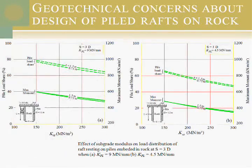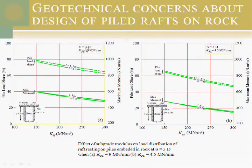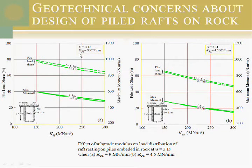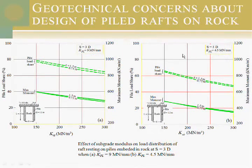As you can see in these figures, we chose to make a pile raft with 25 piles with a spacing of 3D. We assumed that in the finite element using SAFE software, the pile spring constant is 9 MN. In another case we assumed that it is 4.5 MN, and then we checked how much the pile load is sharing in each case.